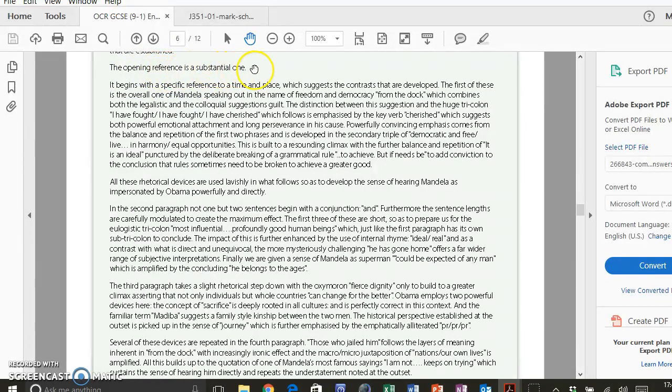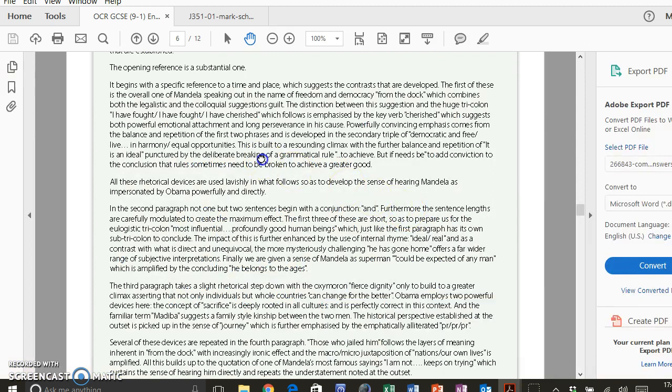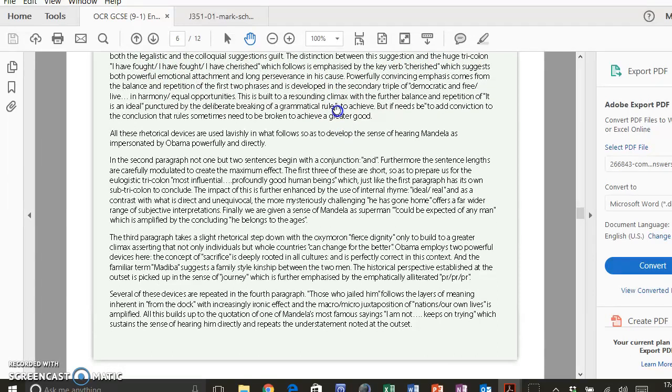And then she says here, 'The opening reference'—so the allusion—'is a substantial one.' And she's right; if you have a look, it's a very large opening paragraph there in Mandela's own words. 'It begins with a specific reference to a time and place, which suggests the contrasts that are developed. The first of these is the overall one of Mandela speaking out in the name of freedom and democracy from the dock.' Here she's embedded a quotation, 'in which combines both the legalistic and colloquial suggestions of guilt.' I think it was supposed to be 'that' here. They're talking about connotations. So connotations are ideas linked with a word. The word 'dock,' the noun 'dock,' is linked with legal, so you'd stand in a dock to give evidence, and obviously associated with guilt as well.